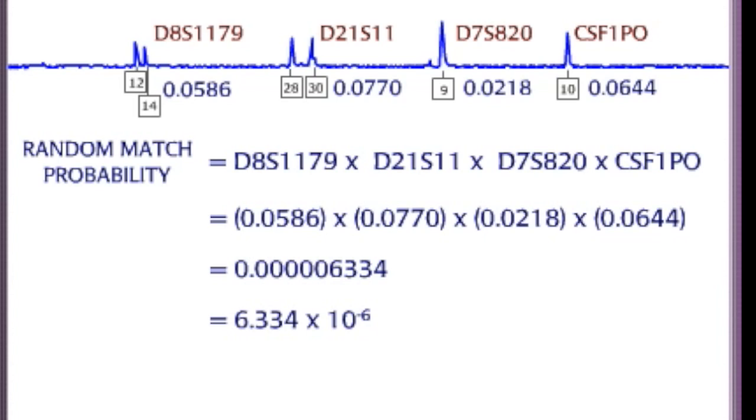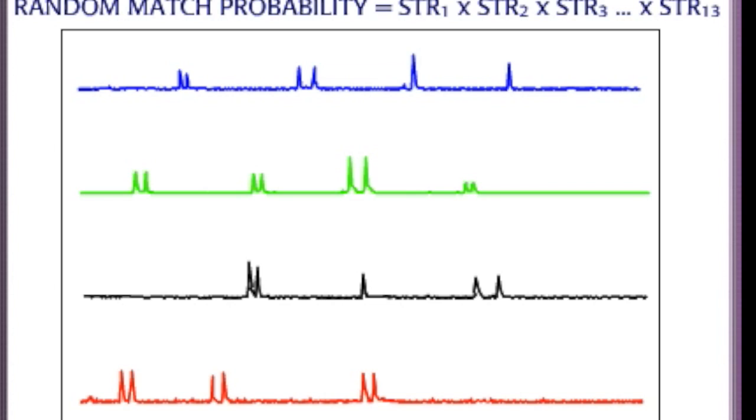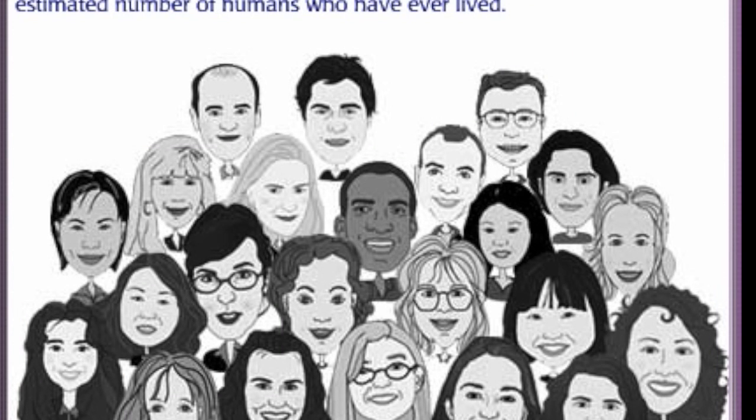For this DNA profile, the random match probability is the product of the individual frequencies of each of the four STRs. In a typical DNA profile that tests for 13 STRs, the random match probability is the product of the frequency of each. Random match probabilities usually range from 10^16 to 10^17. In other words, only one person in every 10 to 100 quadrillion will have this particular STR profile. This number is far greater than the estimated number of humans who have ever lived.